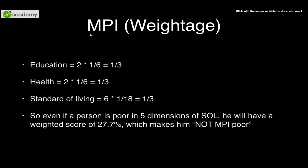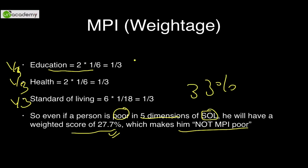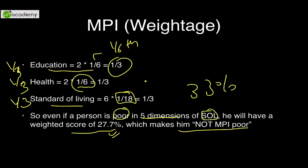The weighting scheme is critical: all three dimensions — health, education, and living standards — each receive one-third weight. Since health has 2 indicators, each gets 1/6. Education also has 2 indicators, so each gets 1/6. Living standards has 6 indicators, so each gets 1/18. A person deprived in five living-standard indicators has a weighted score of only 5/18 ≈ 27.7%, which is below the 33% threshold, so they would NOT be MPI-poor. Weighted average matters more than number of deprivations.